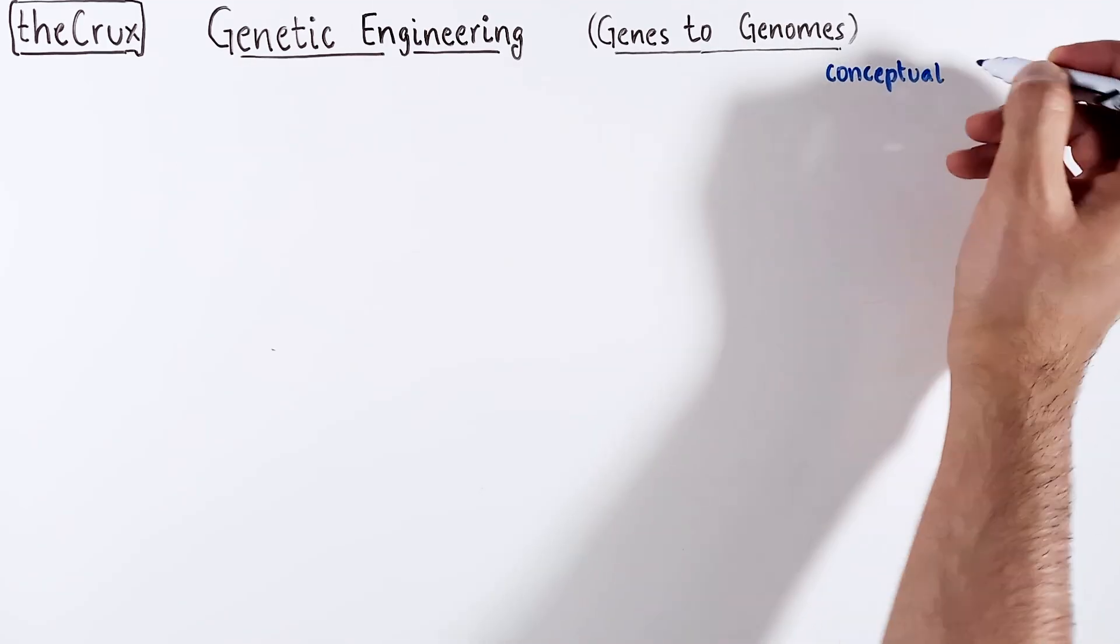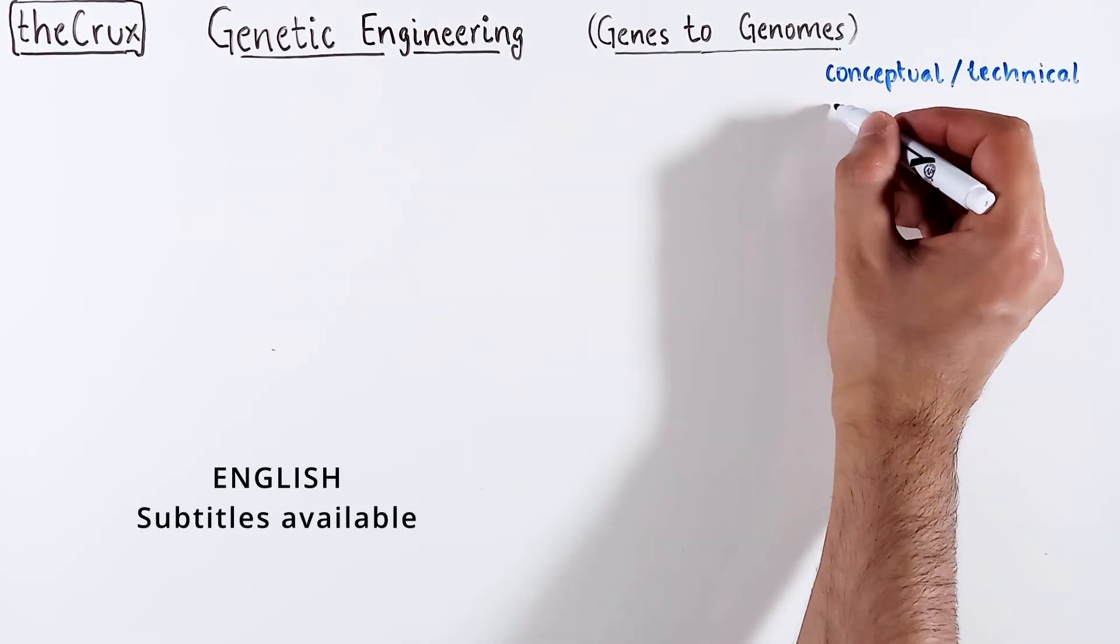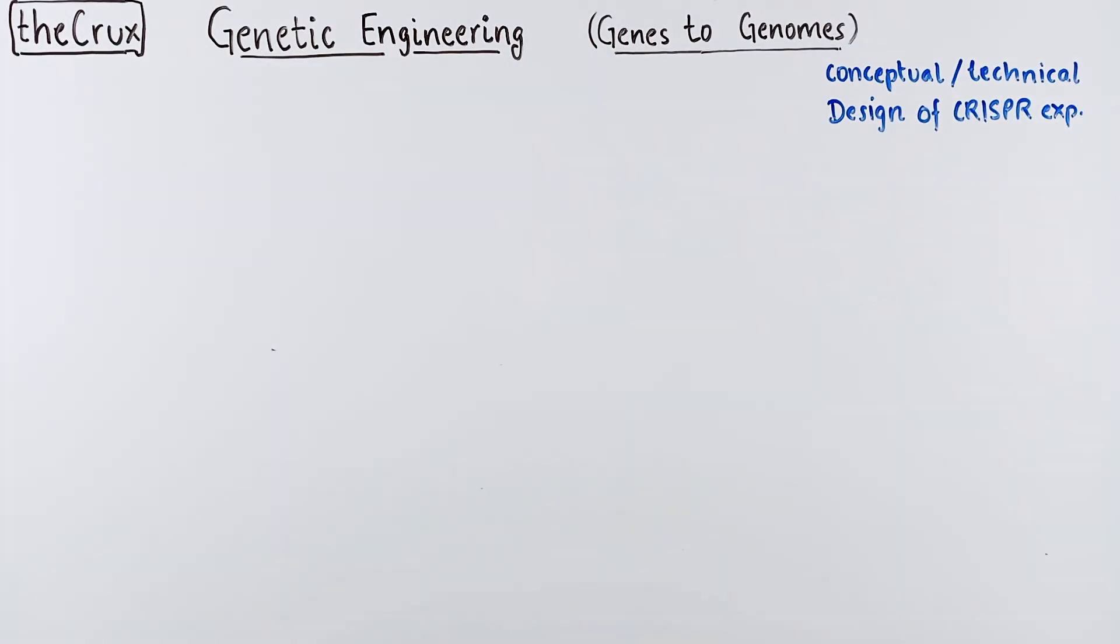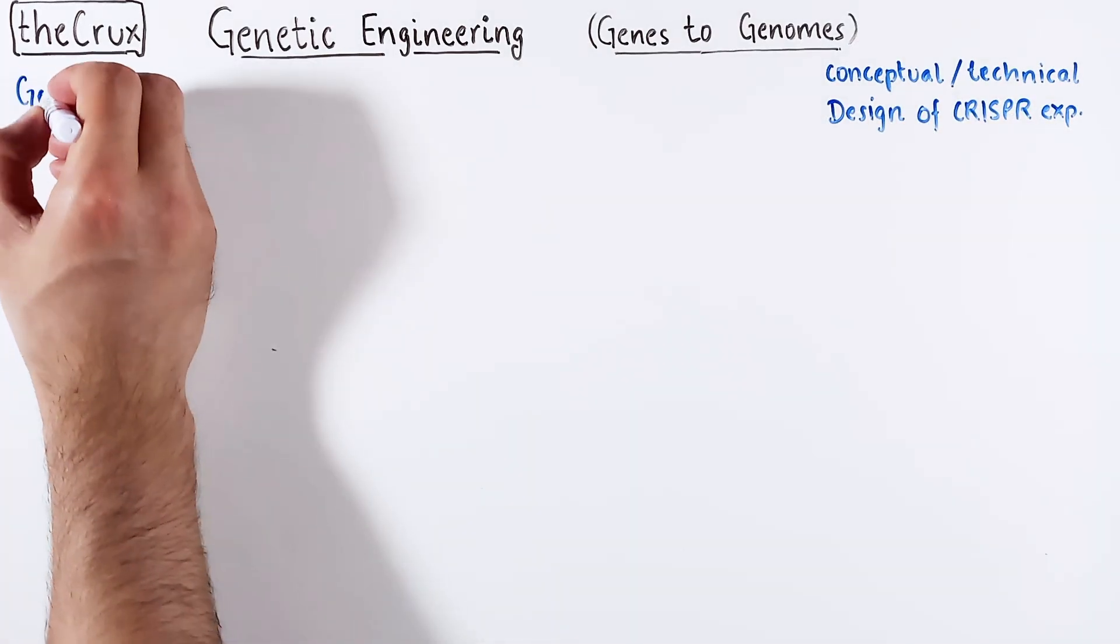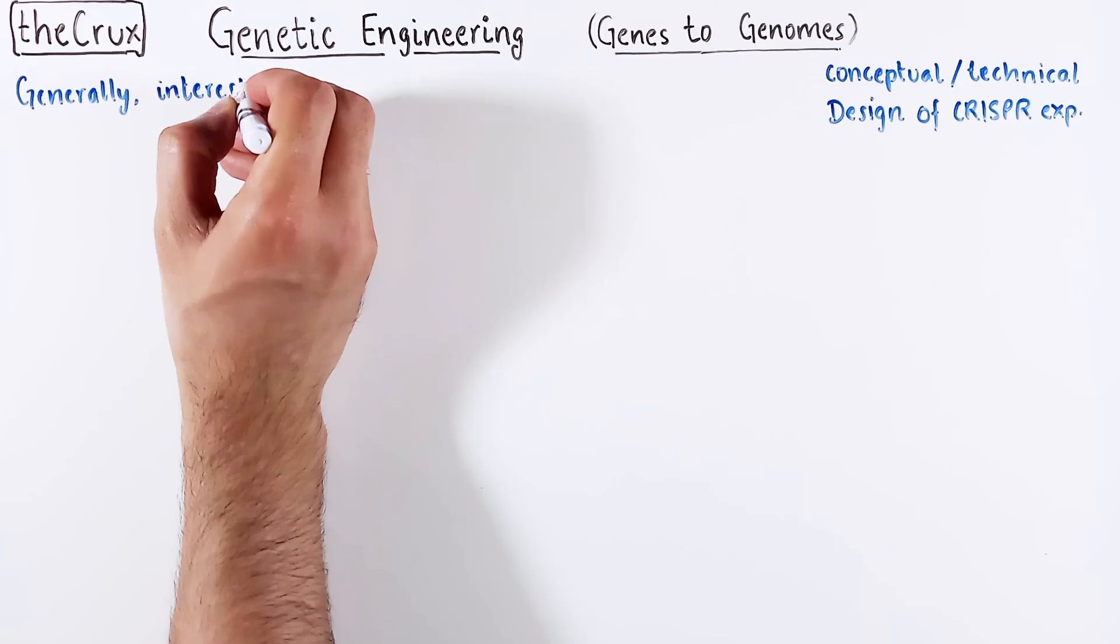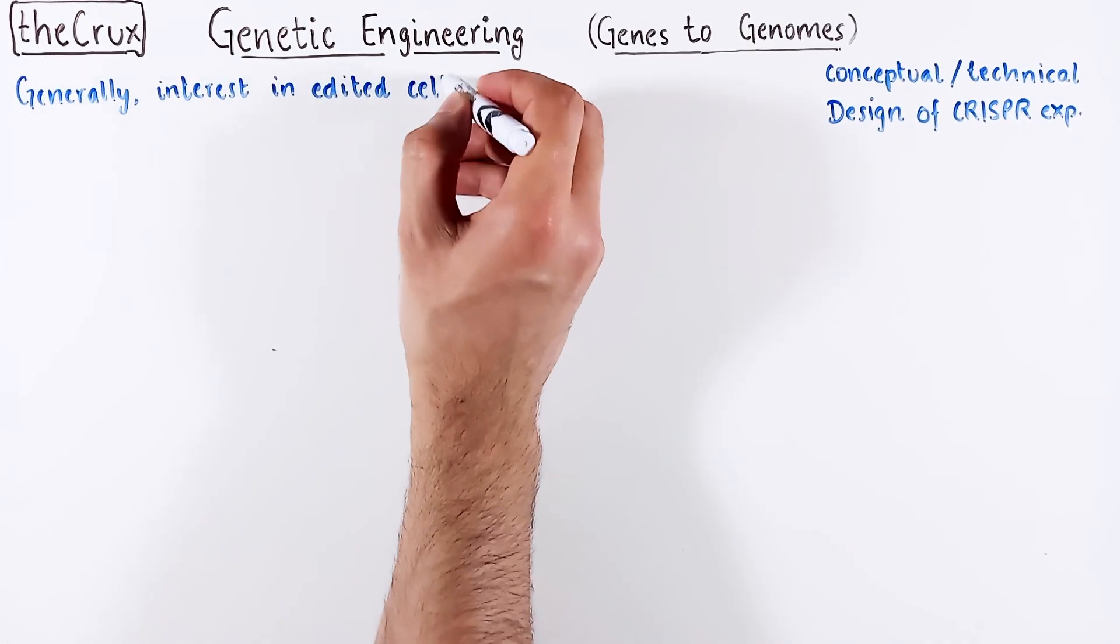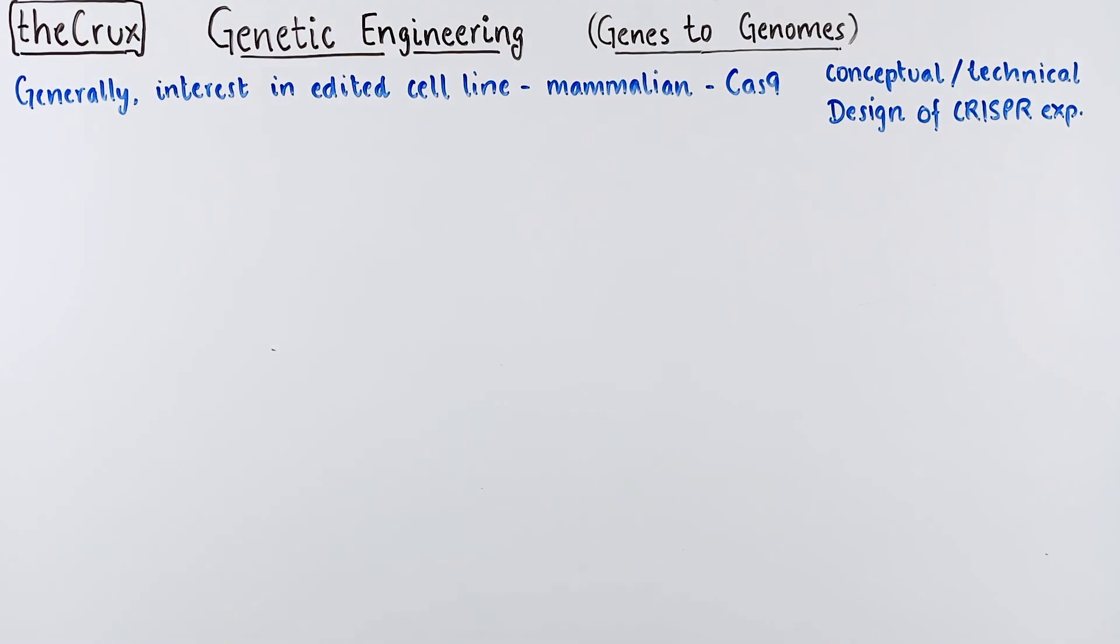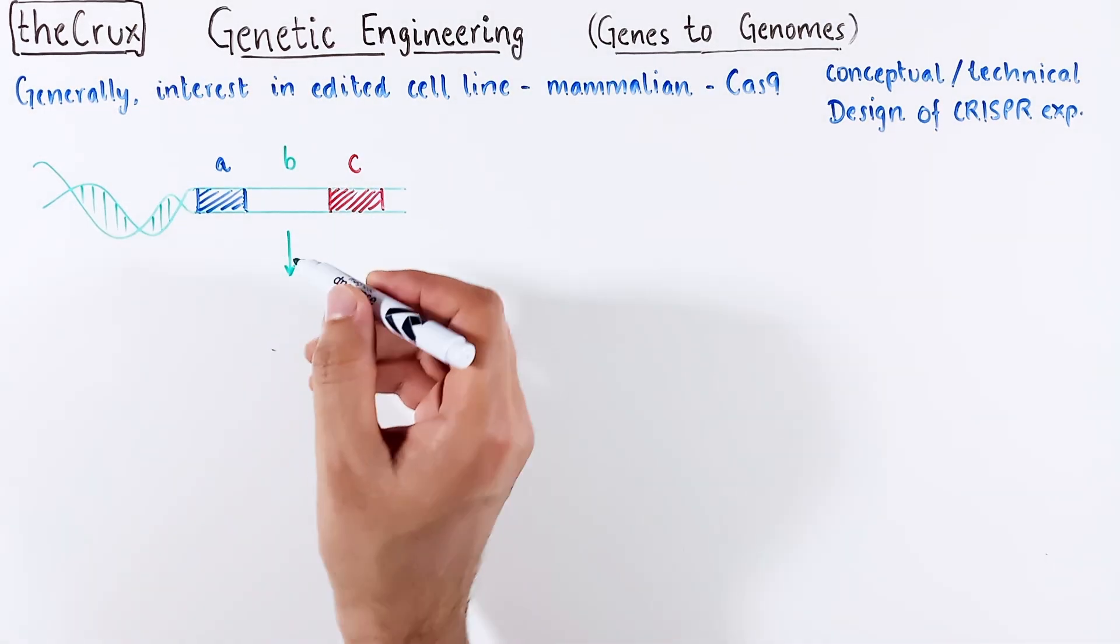This video is a mix of conceptual and somewhat hardcore technical discussion around practical design of a CRISPR experiment. Generally, in a CRISPR experiment, you're interested in creating a stable edited cell line. For this video, I will stick with mammalian cells as an example and use Cas9 nuclease to illustrate the ideas. Broadly speaking, there are two major types of CRISPR experiments.